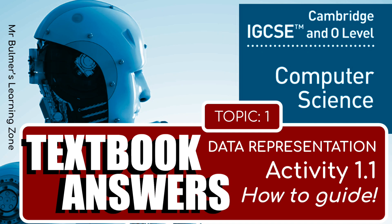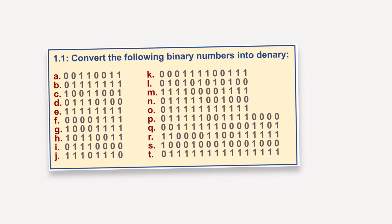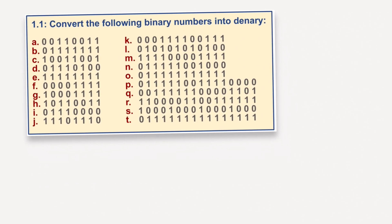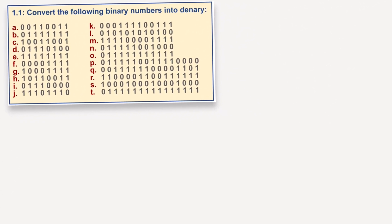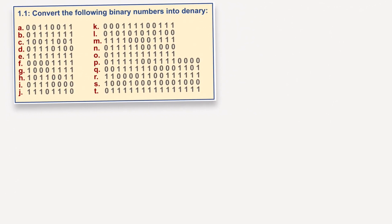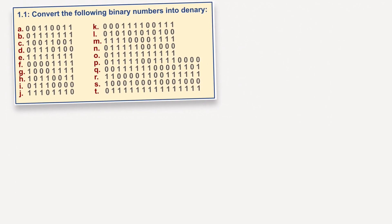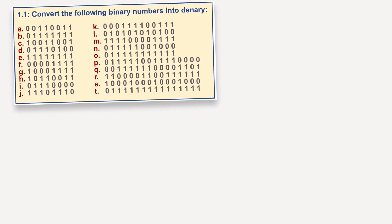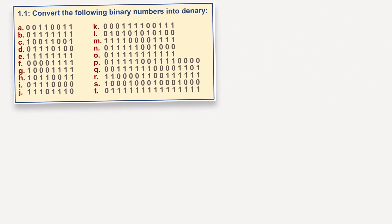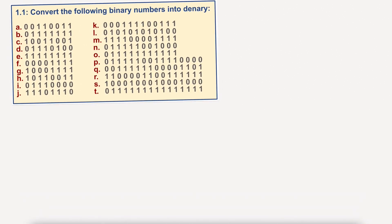Okay, we start with 1.1, converting the following binary numbers into denary numbers. I'm just going to do a couple of exercises, then I will go through the answers with you.